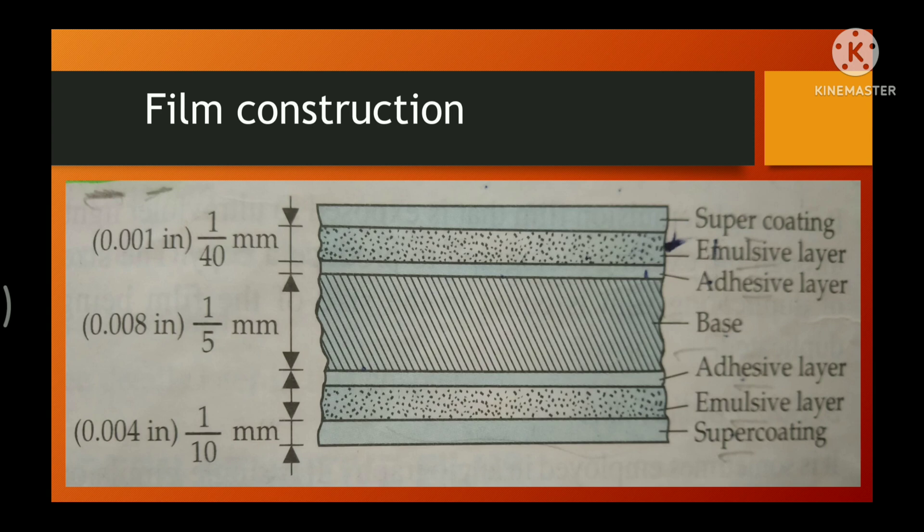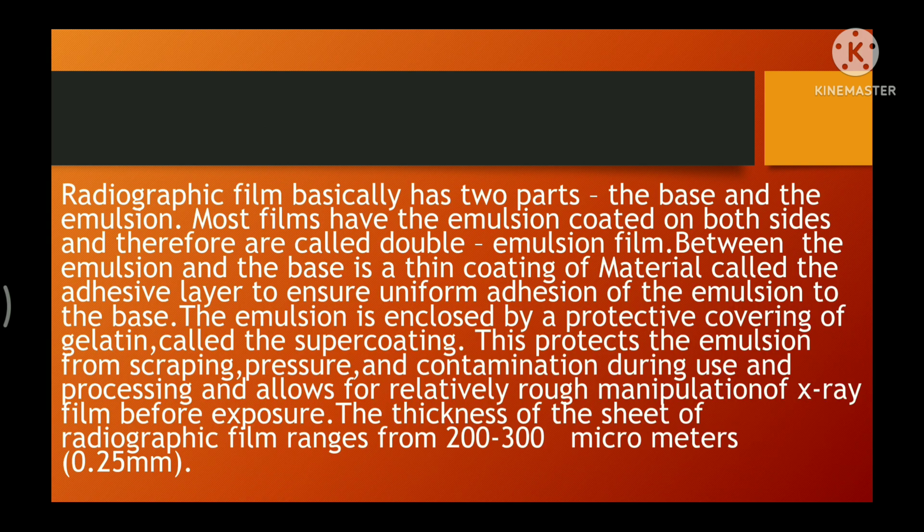This diagram is very important from an examination point of view, so take a very good look at it. When we talk about the thickness of a sheet of radiographic film, it ranges from 200 to 300 micrometers, or approximately 0.25 mm.